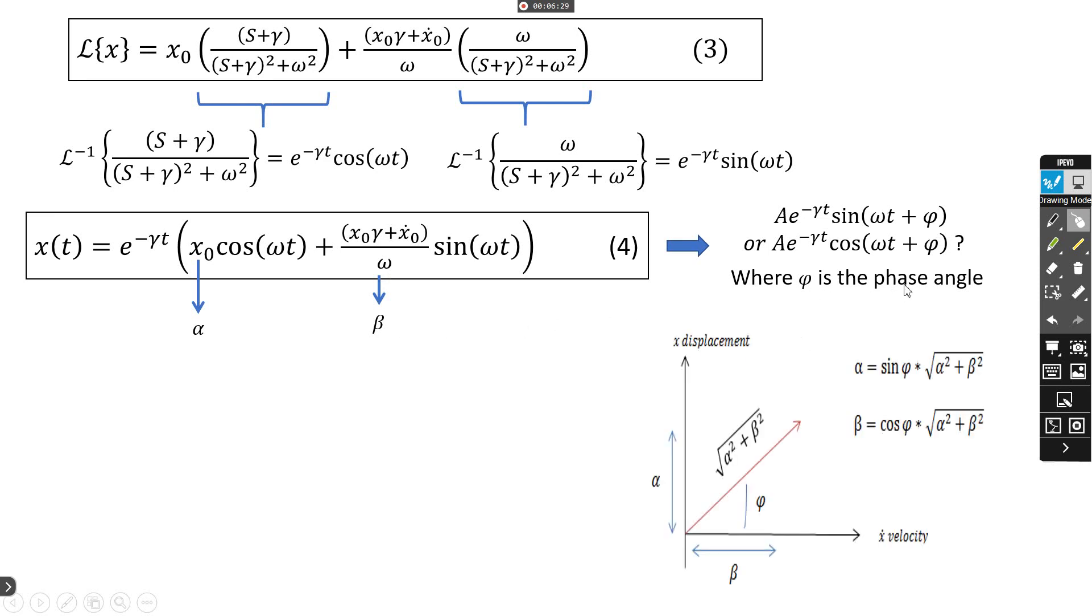We represent the phase space between velocity and displacement. In the x axis we have displacement and in the y axis we have velocity. The initial velocity corresponds to β and the initial displacement to α.